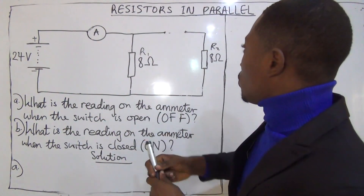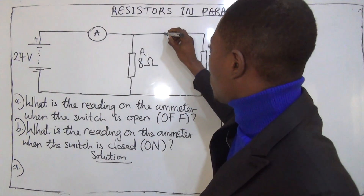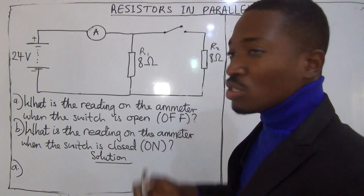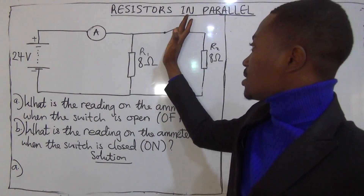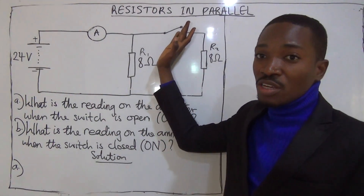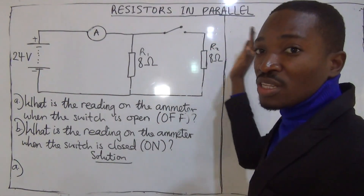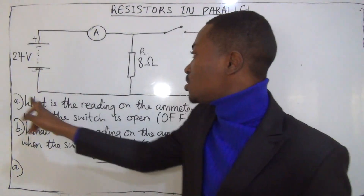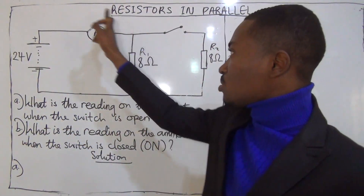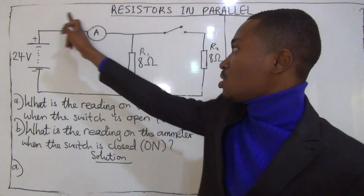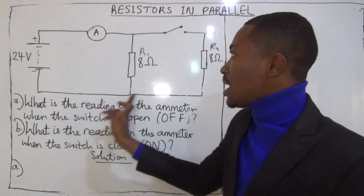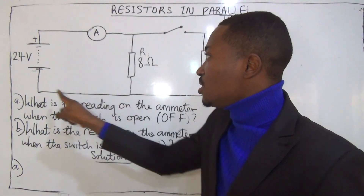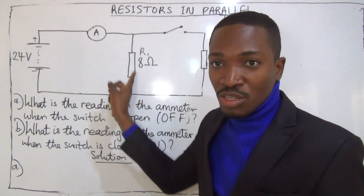This is the switch. When the switch is open, then this right-hand side of the circuit is completely isolated. So we focus only on this part of the circuit. And from this part of the circuit, the reading of the ammeter is the current flowing in this circuit.